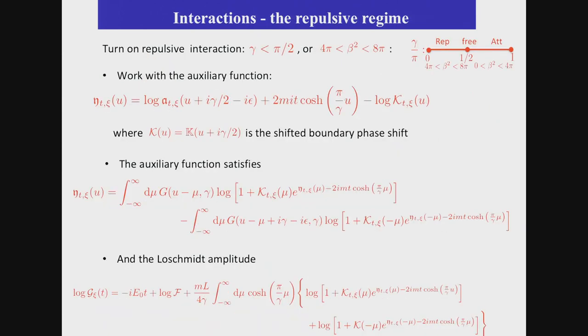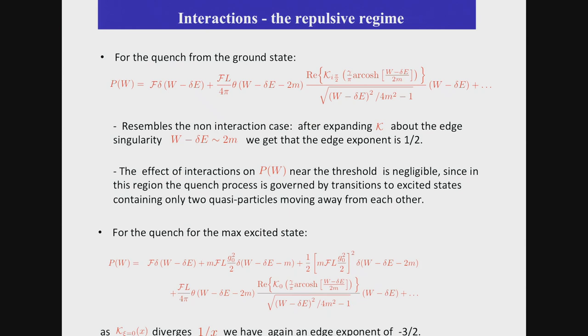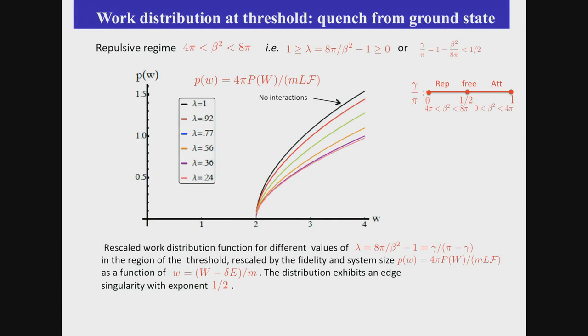Okay, so let me now turn on interactions very quickly. Now I have a new auxiliary function, plug it in to compute the Loschmidt echo, carry out a Fourier transform to obtain the momentum distribution, and we find the following results. There are, turns out, again, they are characterized by critical exponent half for quench from the ground state, and minus 3 halves for quench from the maximal energy excitation.